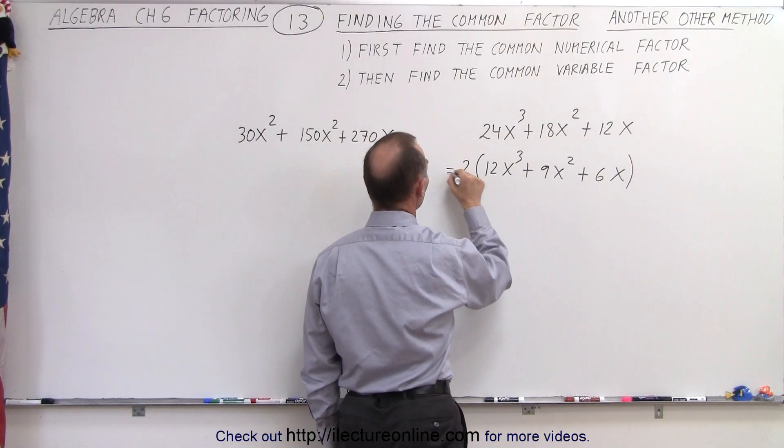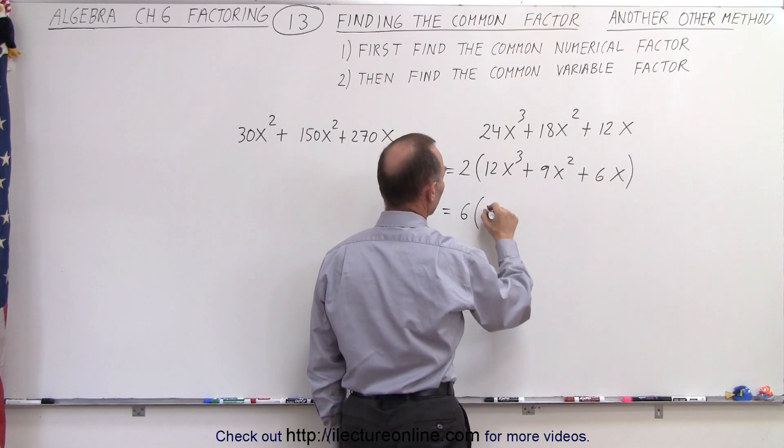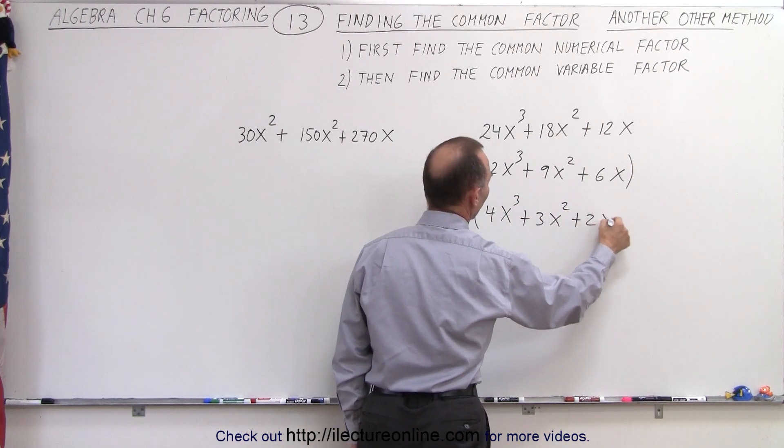So 3 times 2 is 6, so this can be written as 6 times, and we pull out another 3, we now end up at 4x³ + 3x² + 2x.